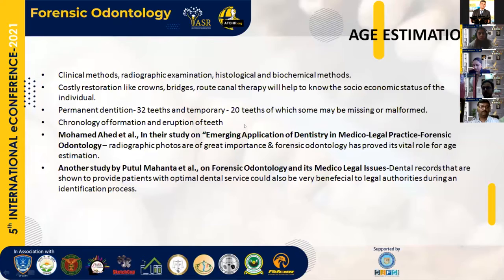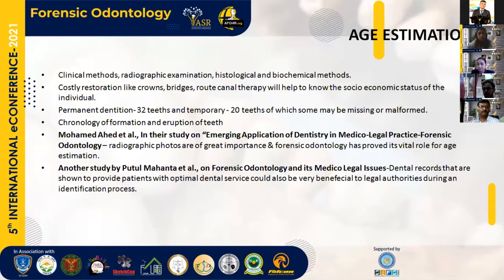I will be emphasizing on major points like age estimation, based on clinical methods, radiographic examination, histological and biochemical methods. Some costly restorations like crowns, bridges, root canal therapy, etc., help to assess the socioeconomic status of the individual. As we know, permanent dentition is 32 and temporary teeth is 20 in number, so we can estimate age mainly based on the chronology of formation and eruption of tooth.